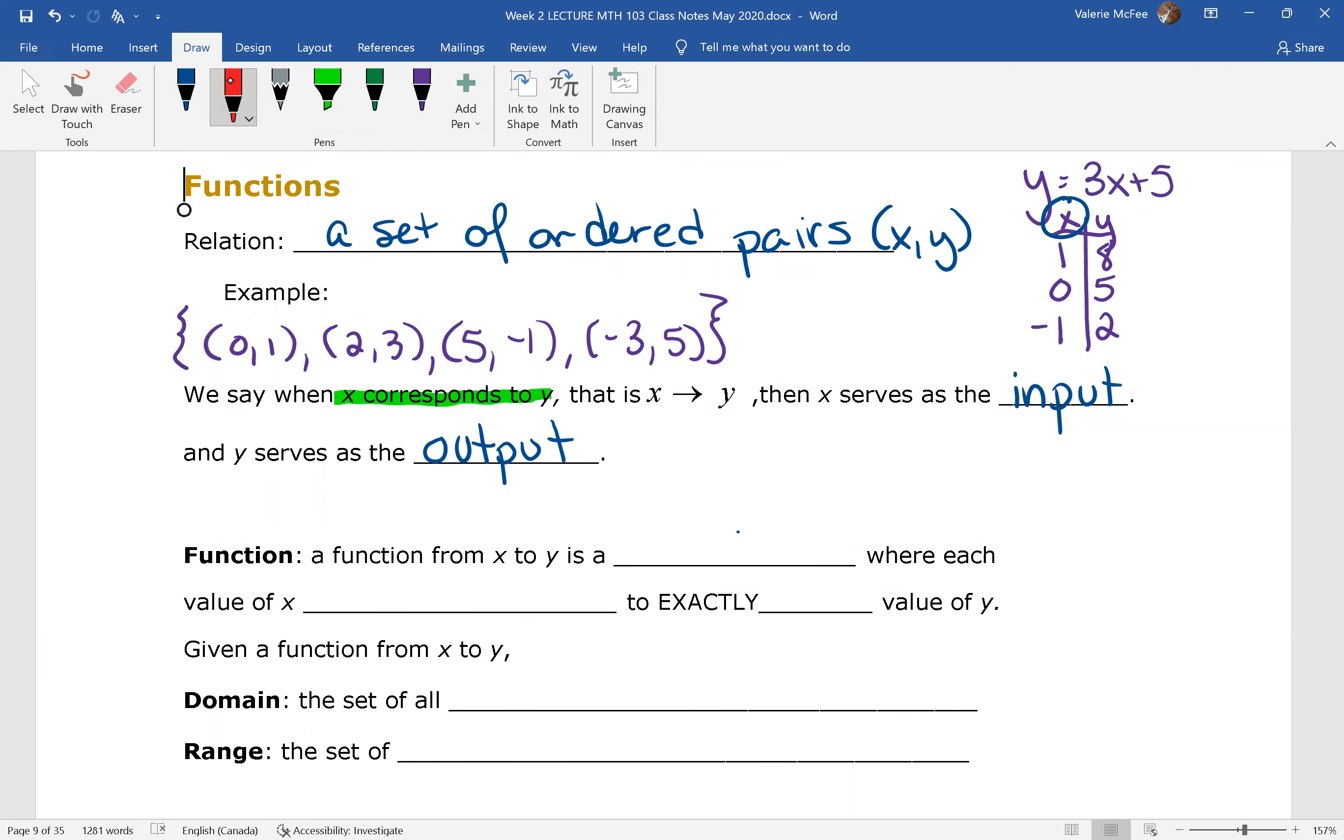A function is a specific type of relation. A function is a relation where each value of X corresponds to exactly one value of Y. The domain is the set of all permissible X values. Remember when we were looking at rational expressions, we were finding non-permissible values of X. The domain is the permissible values of X. The range is the set of corresponding Y values.